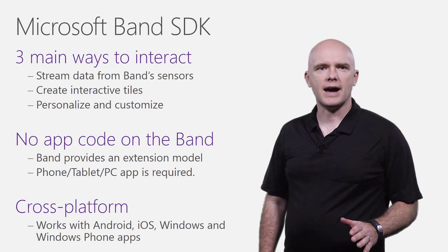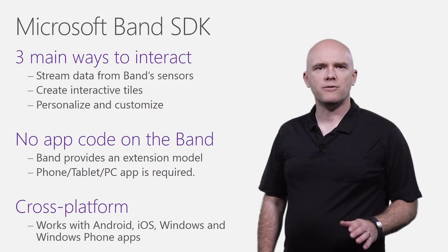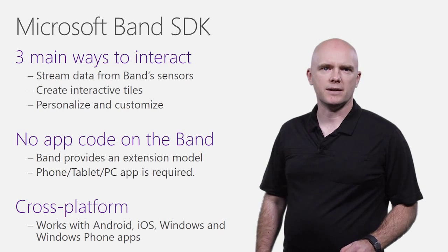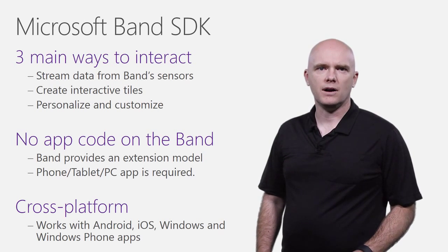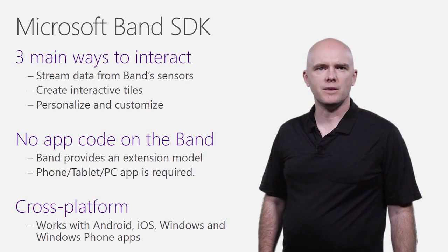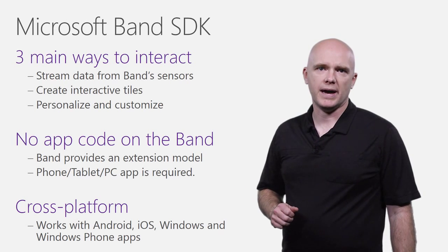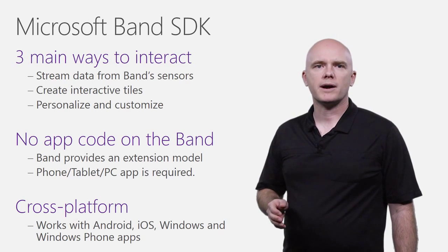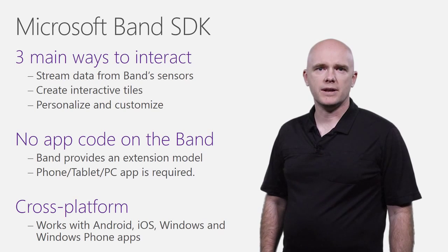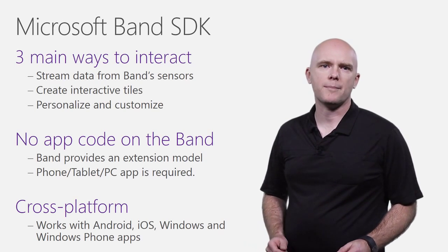This will allow you to provide on-band feedback to the user and send messages to the user's Band. The Band SDK also allows you to provide Band customization to your users by setting the Band theme colors and the Me Tile. Since no app code runs on the Band, you require a companion app to interact with the Band. Your companion app can be an Android, iOS, Windows Phone, or Windows Store app.